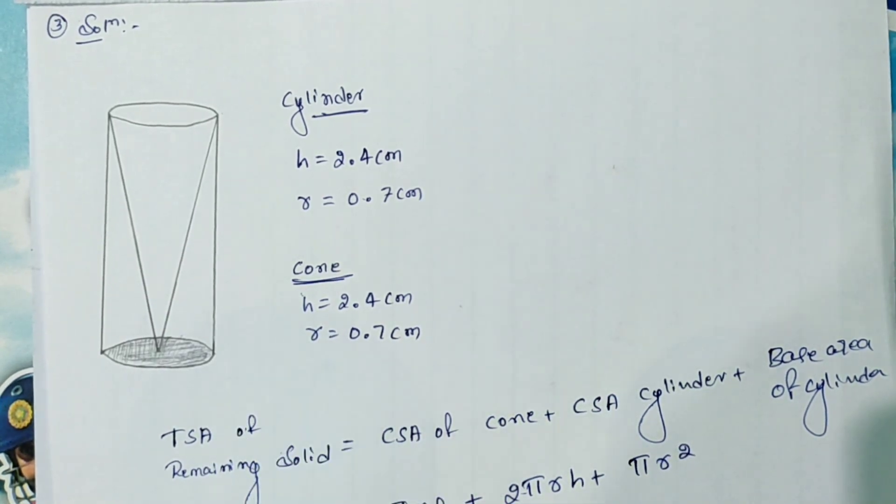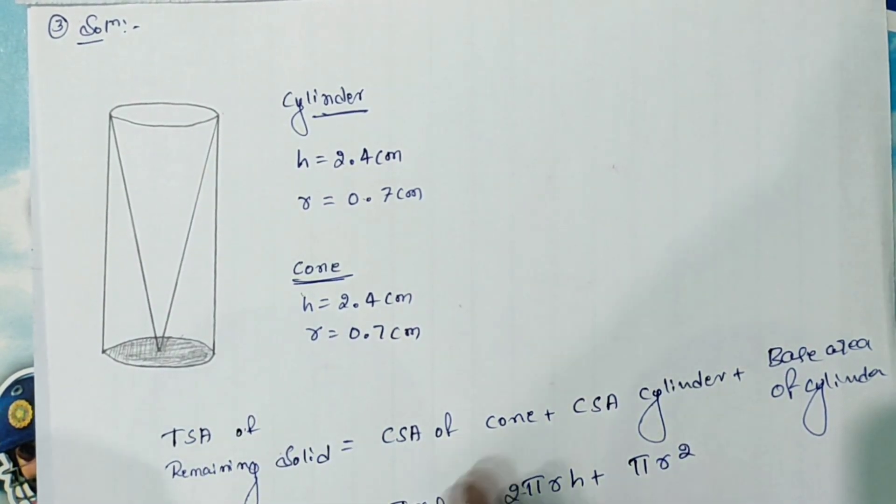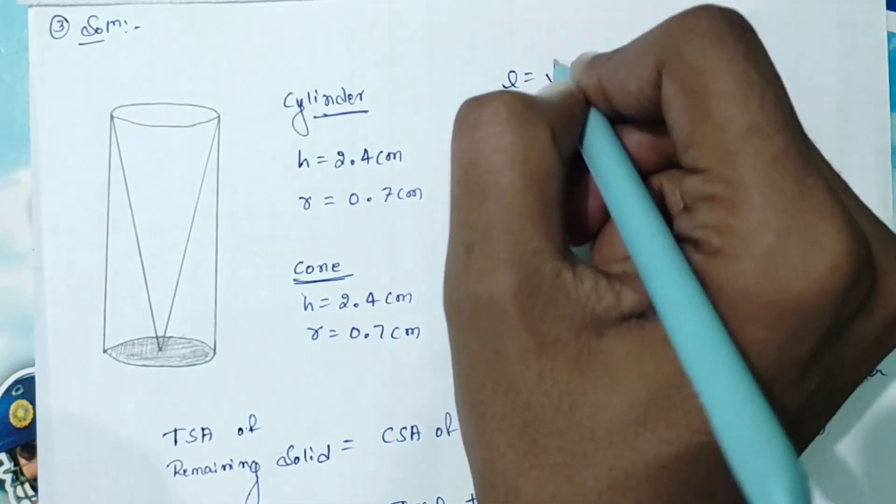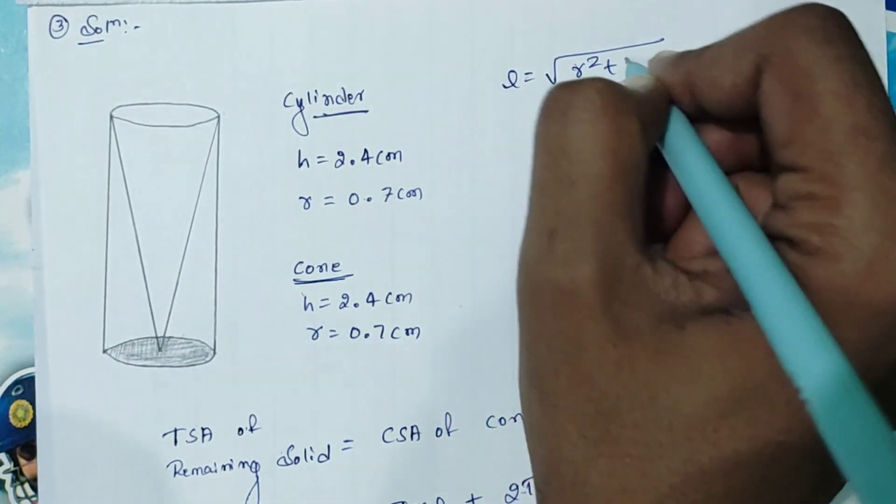Here for the cone, they are not given the slant height. We need to find L is equal to square root of r² plus H².